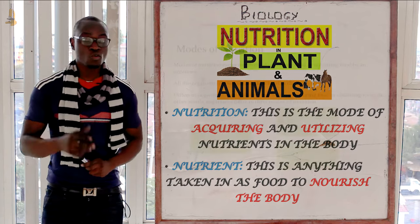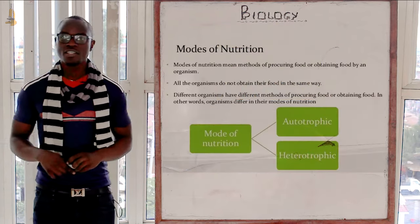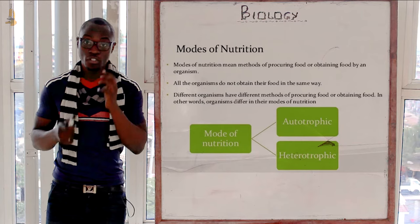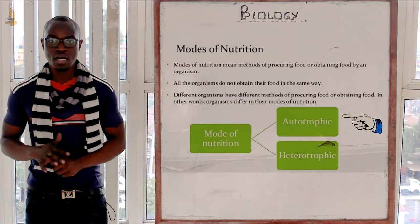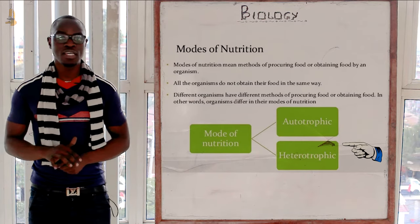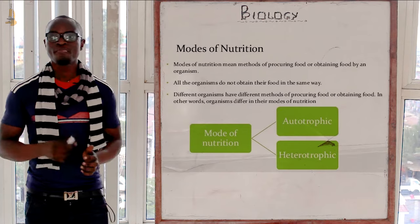So let's look at the two modes of nutrition that we have. The first mode is autotrophic nutrition, and the second one is heterotrophic nutrition.